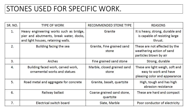Now let's discuss the uses of stones. A list of building stones commonly used along with their classification and characteristics is given in the table below. For heavy engineering works such as bridges, piers and abutments, breakwaters, docks, lighthouses, and retaining walls, granite is used because it is heavy, strong, durable, and capable of resisting large thrust. For work of buildings facing the sea, granite and fine-grained sandstone are used because these are not affected by the weathering action of sand particles blown by air.